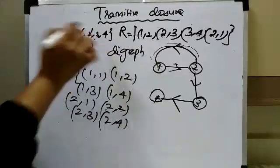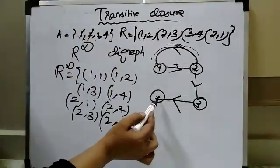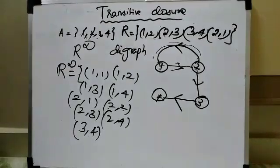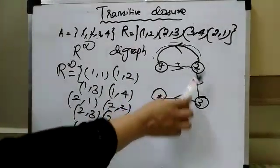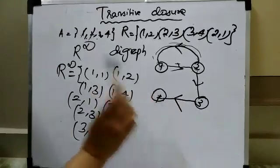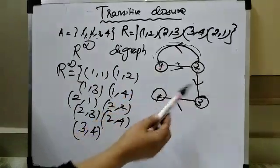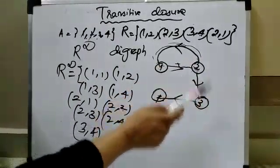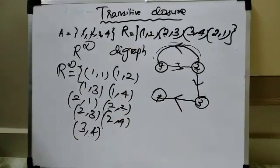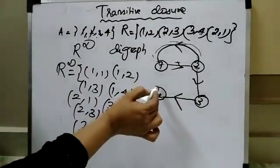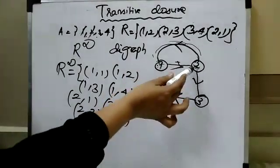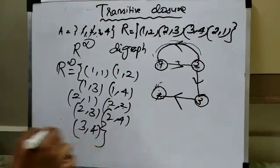Next vertex is 3. From 3, I can reach 4, so (3, 4) is possible. However, it is not possible to travel from 3 back to 2 or 1, because there is no directed edge from 3 to 2 — we have only one direction, from 2 to 3. For vertex 4, there is no edge starting from 4 going to 1, 2, or 3, so there is no possibility from vertex 4. This completes the transitive closure for Example 1.